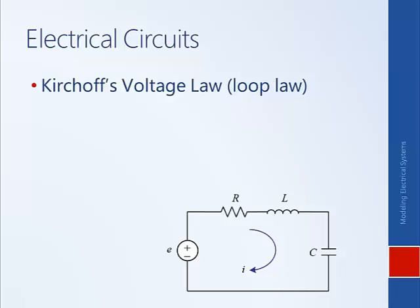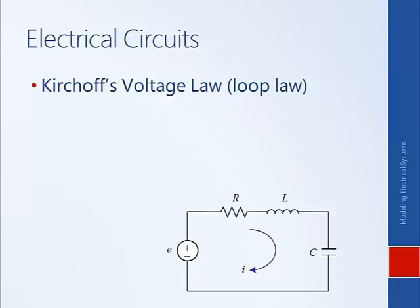The second law is called Kirchhoff's voltage law, or the loop law: voltages around a loop must sum to zero. This makes intuitive sense because voltage is a potential difference — if we return to the same point in a circuit, we must have the same potential. For example, starting at a point in the circuit and moving clockwise, assuming current flows in that direction.